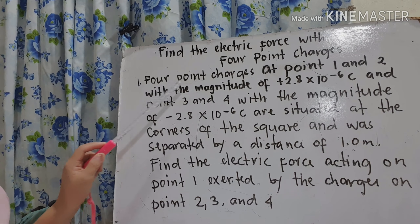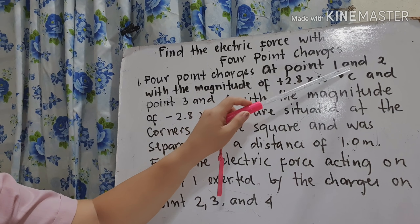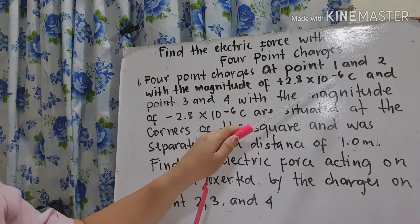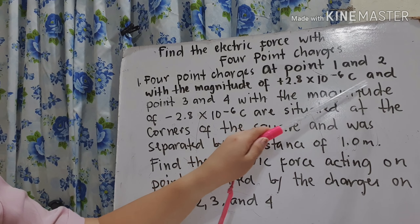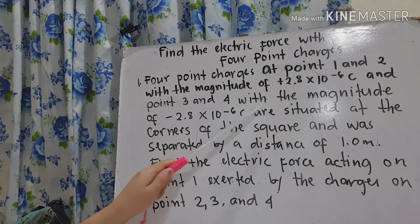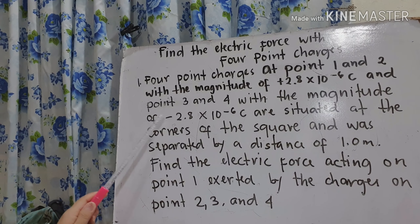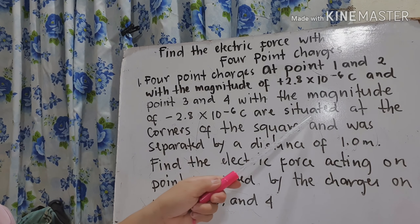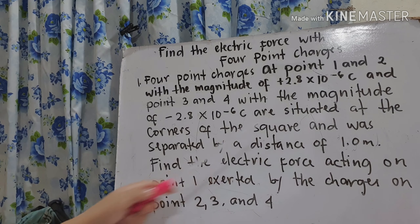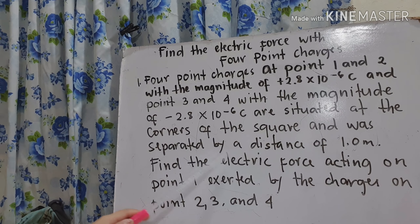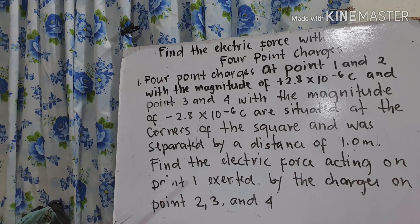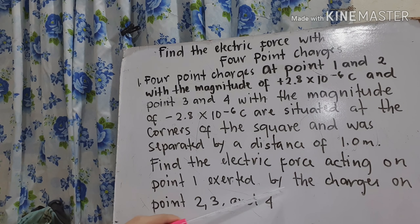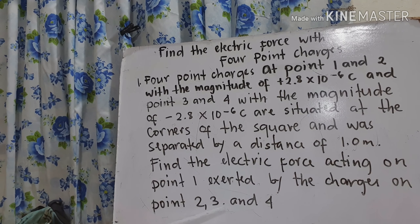We have 4-point charges: Q1 and Q2 with a magnitude of positive 2.8 times 10 raised to negative 6 coulombs, and Q3 and Q4 with a magnitude of negative 2.8 times 10 raised to negative 6 coulombs. They are situated at the corners of a square separated by a distance of 1 meter. Let's find out the electric force acting on Q1 exerted by the charges Q2, Q3, and Q4.